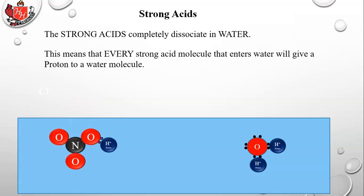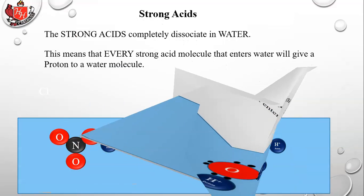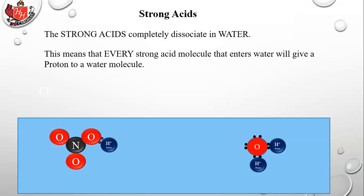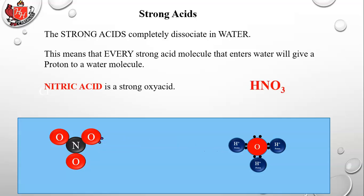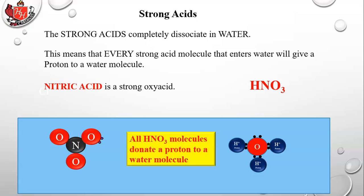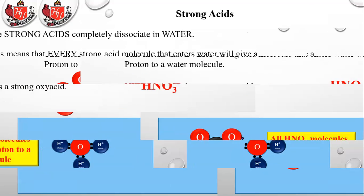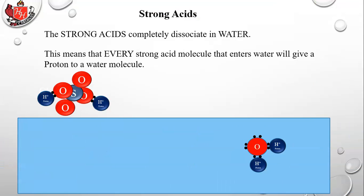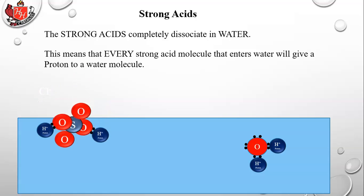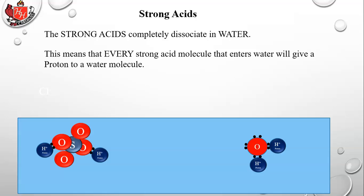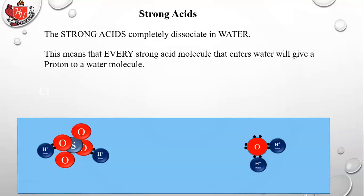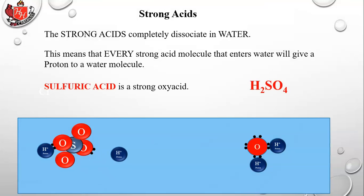Nitric acid HNO3: the proton moves over to the water molecule, and all HNO3 molecules donate a proton. Sulfuric acid H2SO4 goes in next — the first proton is a strong acid and 100% of the time will jump to a water molecule, like that.